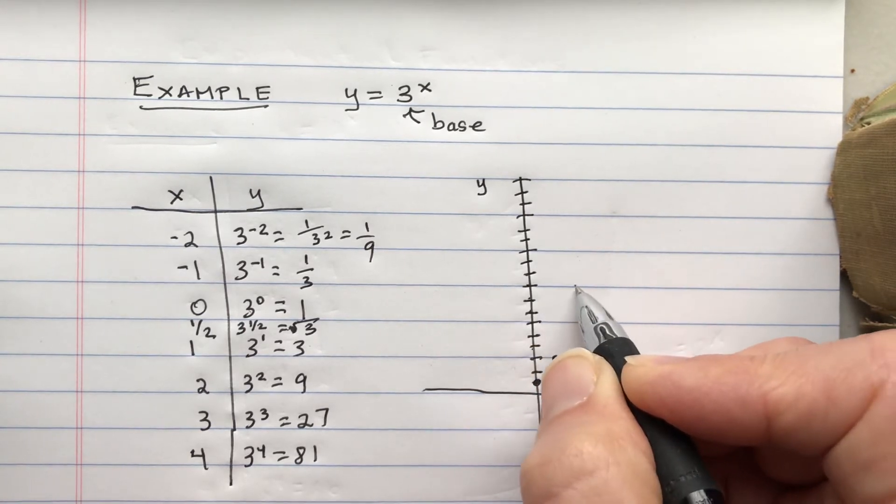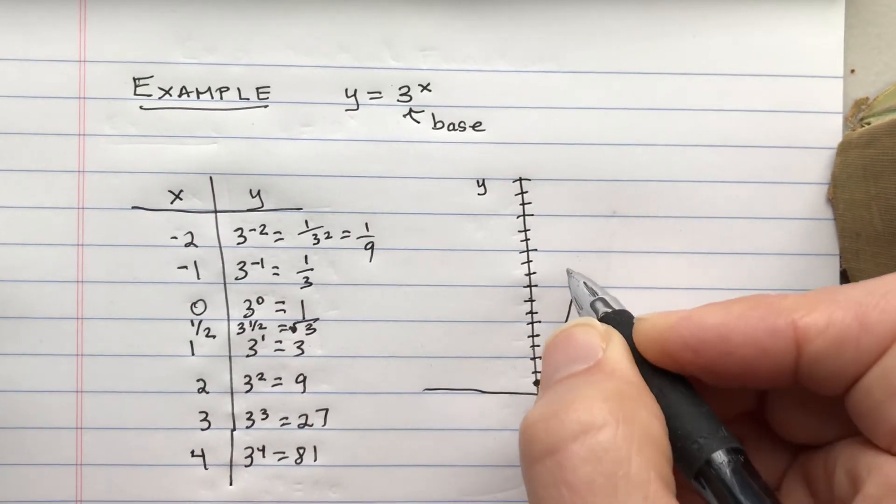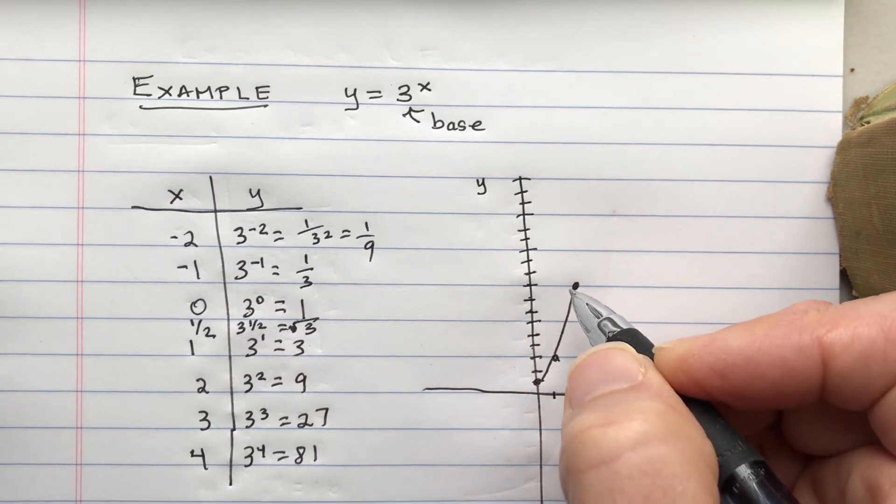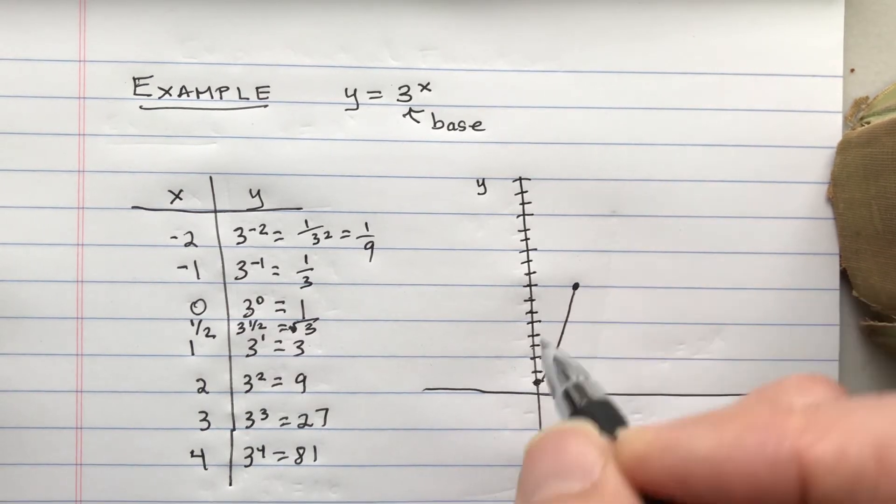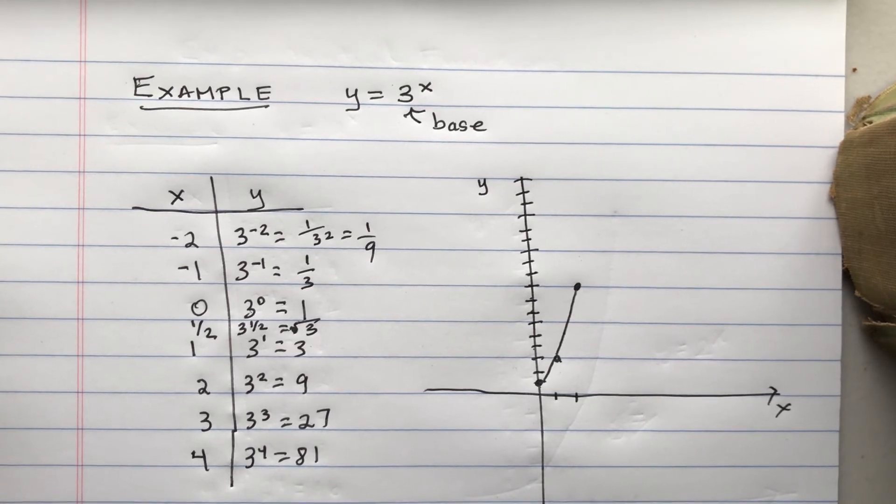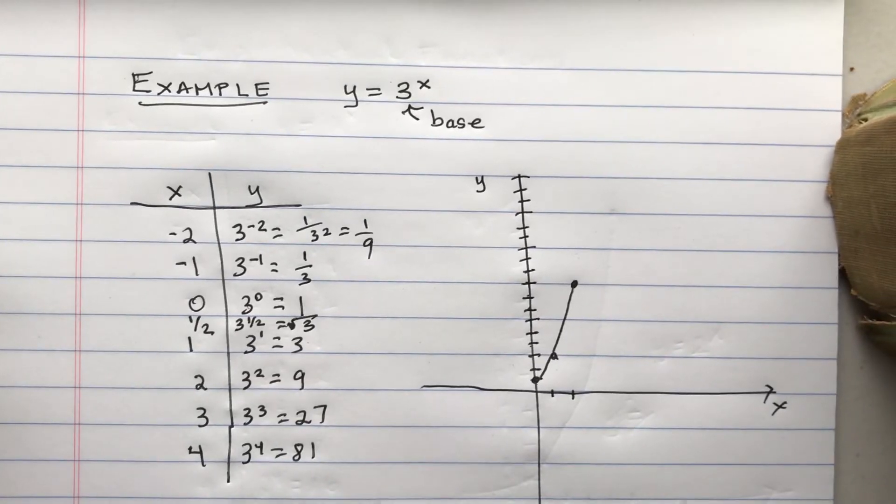So we can see this thing really grows very quickly. So exponential growth is an expression that you hear people use. And it's sort of a shorthand for saying that the graph grows really quickly. But it actually has a technical meaning, which is that as x increases, y is multiplied by a certain number. In this case, as x increases, y is multiplied by 3.